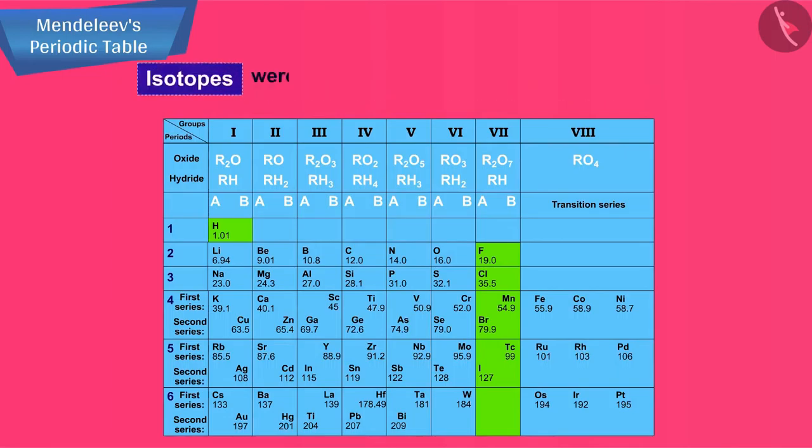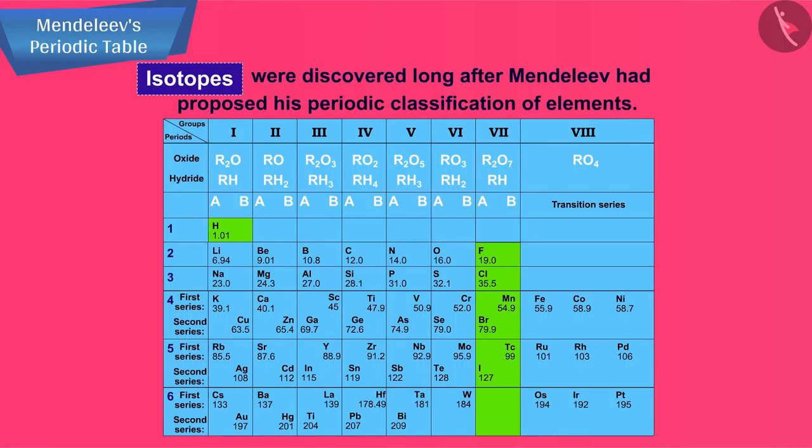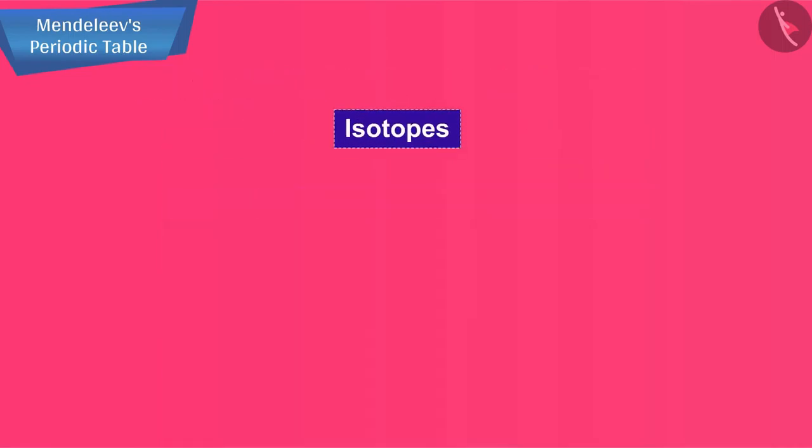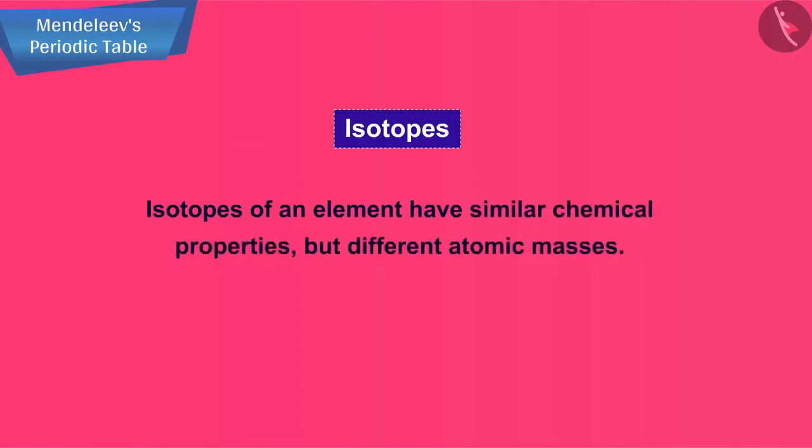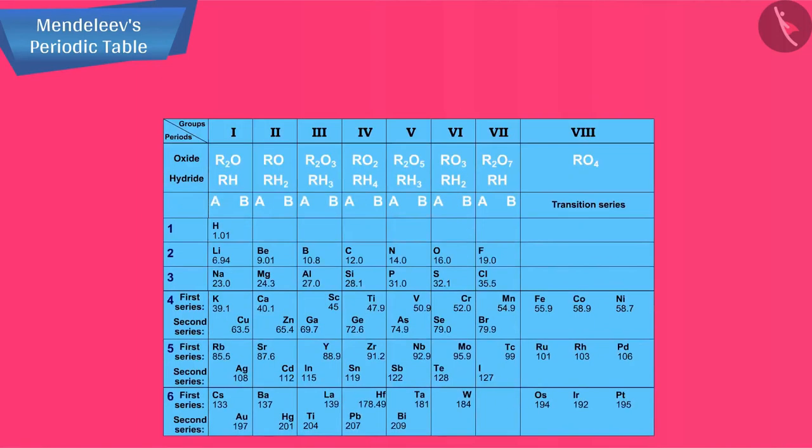Isotopes were discovered long after Mendeleev had proposed his periodic classification of elements. Let us recall that isotopes of an element have similar chemical properties but different atomic masses. Thus isotopes of all elements posed a challenge to Mendeleev's periodic law.